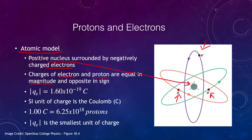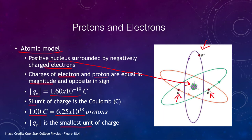That amount of charge is given by qe — the charge of the electron — equal to 1.6 times 10 to the minus 19 coulombs, where the coulomb is the SI unit of charge. To get one coulomb requires 6.25 times 10 to the 18th protons or electrons. This is the smallest unit of charge — the charge of the electron.